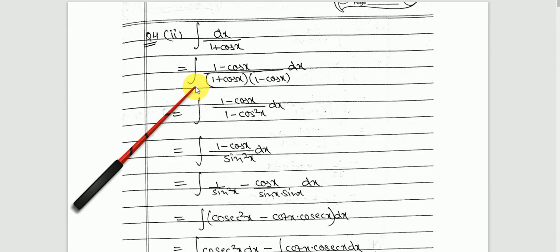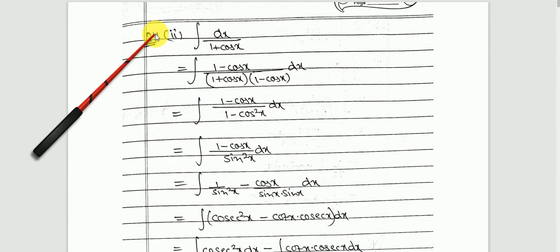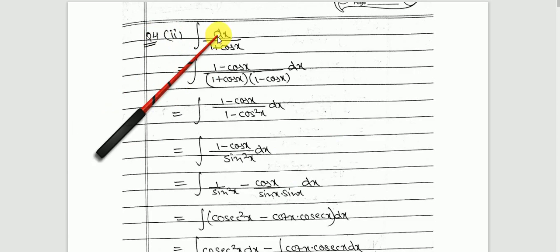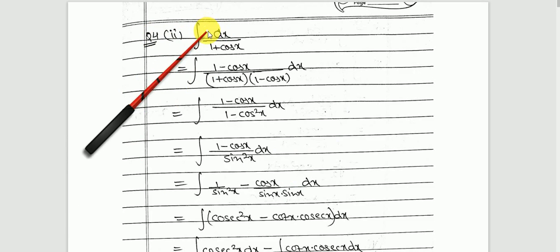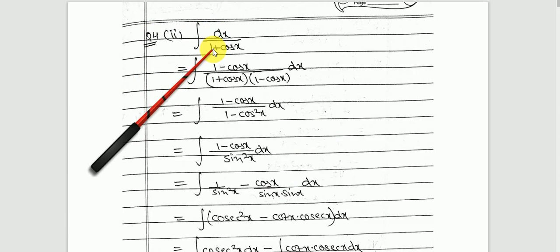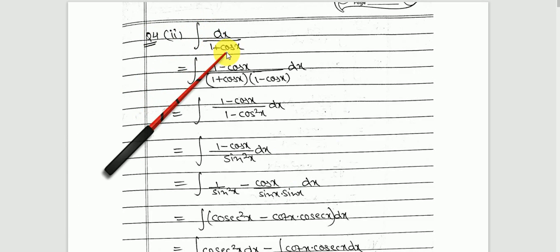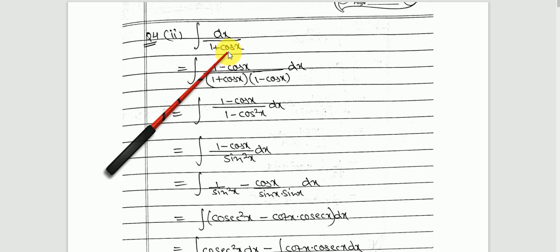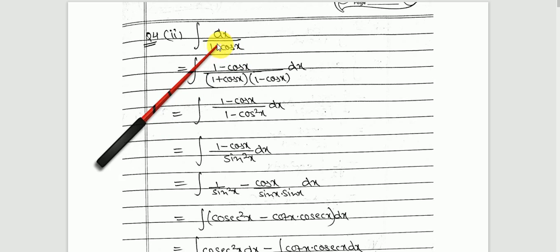Now let us move on to the next question. Here question number 4.2: we have to integrate 1 upon 1 plus cos x with respect to x.